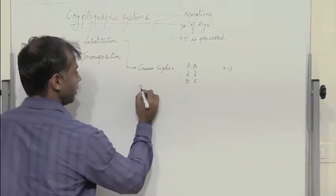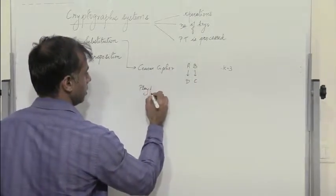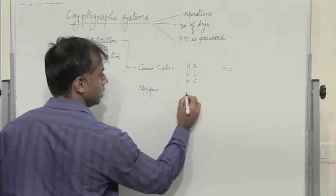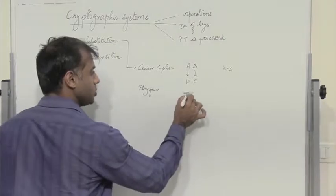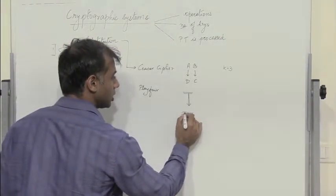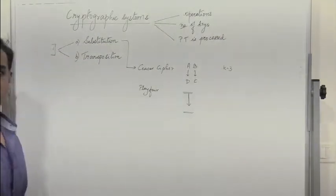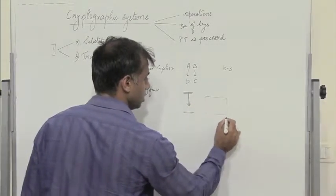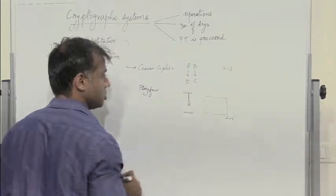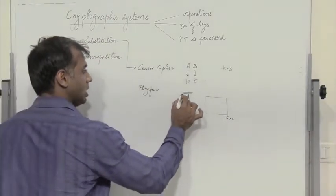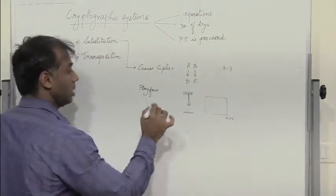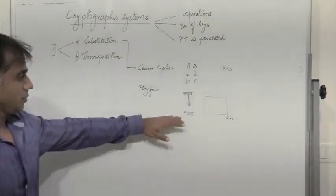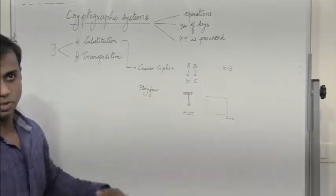The same thing happens with Playfair, wherein we have two alphabets which are substituted by two other alphabets. The substitution is dependent on the 5x5 key matrix used. Two alphabets taken at a time from the plain text are replaced by two other alphabets of the cipher text. So we have substitution taking place.